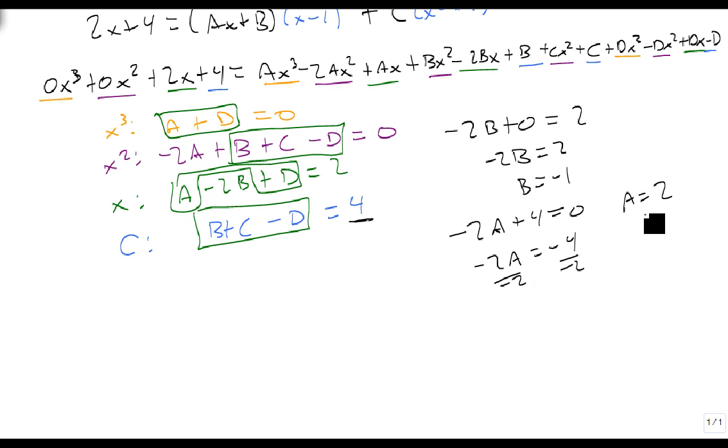So now that I know what a is, and I know what b is, it becomes a lot easier to find c and d. In fact, d is really easy, because 2 plus d equals 0, which means d is a negative 2. So let me highlight these so they're real easy to find.